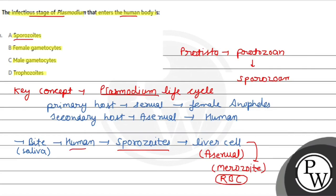The first option, Sporozoite, is correct. Female gametocytes are found in RBC — that is wrong as the infectious stage. Male gametocytes are also in RBC — also wrong. Trophozoite is the feeding stage of Plasmodium — it does not enter the human body in that form. When you enter the human body it is called Sporozoite, not Merozoites. The answer is A — Sporozoite is correct. I hope you understood very well. Best of luck.